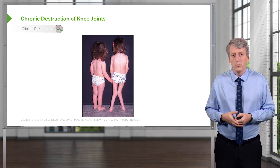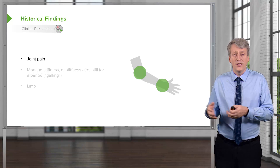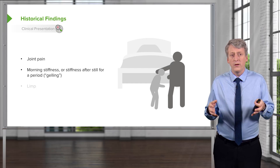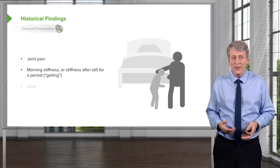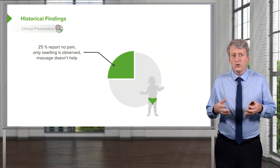When diagnosing a patient, you will want to hear a history of joint pain, unless it's the systemic variety you're suspecting. Patients often have morning stiffness, or stiffness after being still for a prolonged period — we call this gelling. These patients often have a limp, especially when the lower extremities are involved. About 25% of patients with JIA will report no pain, only swelling, and massage doesn't seem to help.